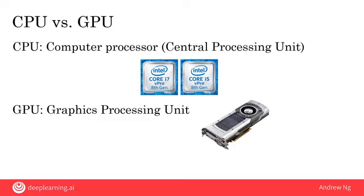NVIDIA is a company that's been selling many GPUs, but other companies, including Qualcomm, as well as Google making its own TPUs, are increasingly making specialized hardware for powering these very large neural networks.